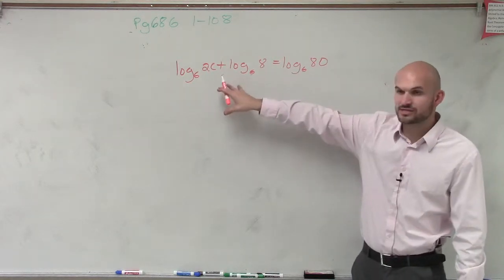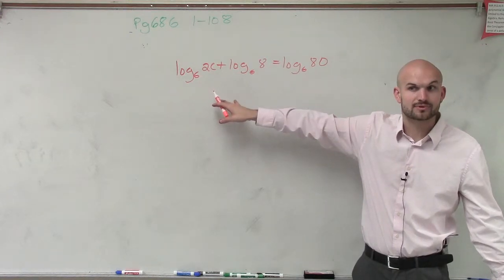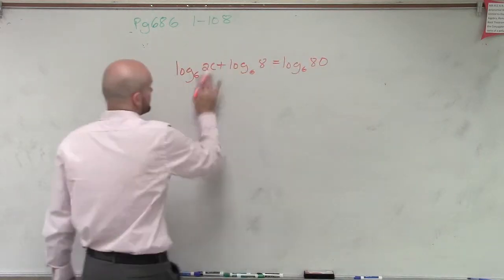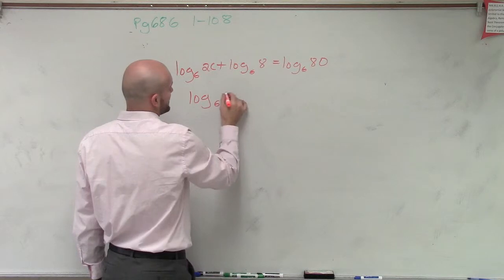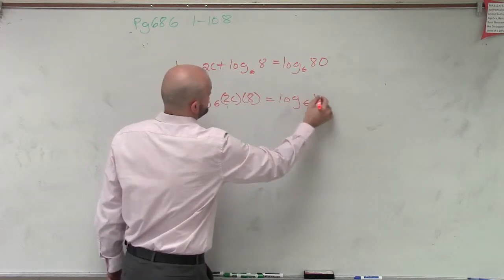We have a logarithm plus another logarithm. However, when you have the addition of logarithms, can we apply the property of logarithms, the product property? Yes. So therefore, this equals log base 6 of 2c times 8 equals log base 6 of 80, right?